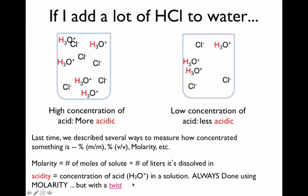When people measure acidity, they usually describe it in terms of H3O+ concentration. If you throw a lot of acid into your container, many H pluses get donated to water, giving you a large amount of H3O+. If you throw in less acid, there are fewer H pluses donated to water, meaning fewer H3O+ molecules. So acidity is usually described by the concentration of H3O+ in your liquid.